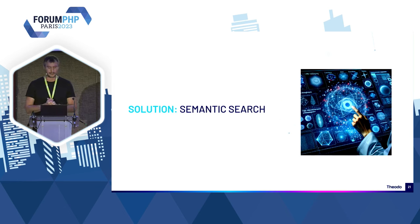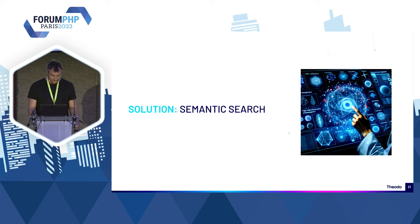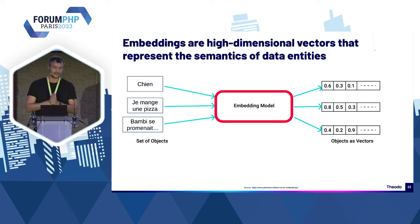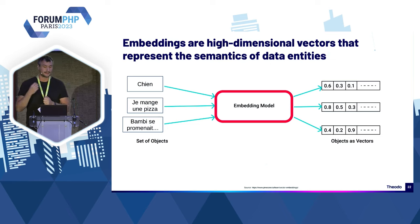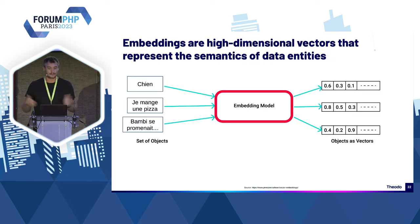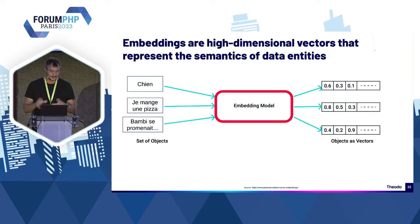Qu'est-ce que font toutes les apps IA ? Elles font ce qu'on appelle de la recherche sémantique ou de similitudes. Concentrez-vous bien parce que c'est le seul truc que vous avez à retenir de ma présentation. Le truc un peu magique, c'est que les modèles d'embedding arrivent à transformer du texte — un mot, une petite phrase, un paragraphe entier — en une suite de flottants qui représente un vecteur dans un espace, en gardant conceptuellement le sens du texte.